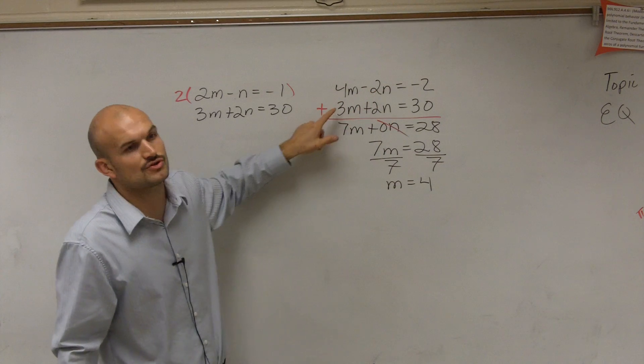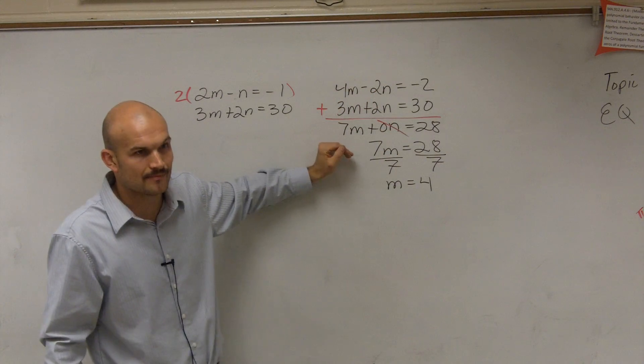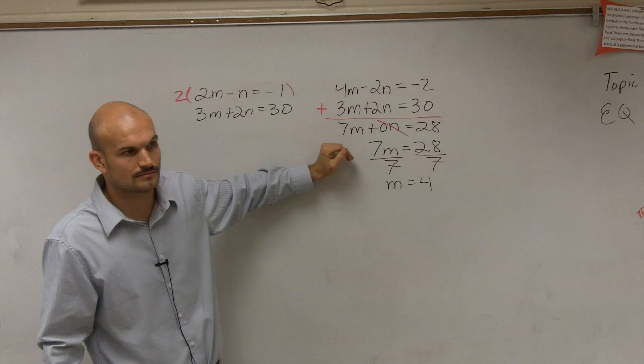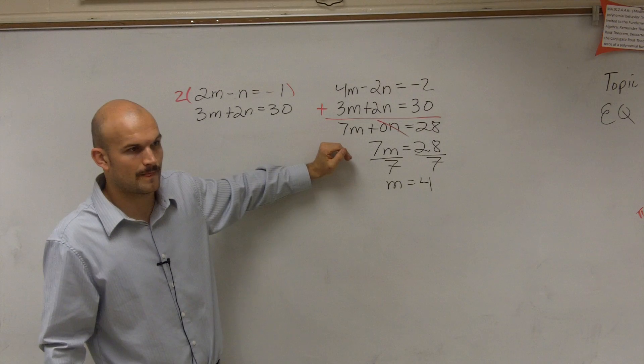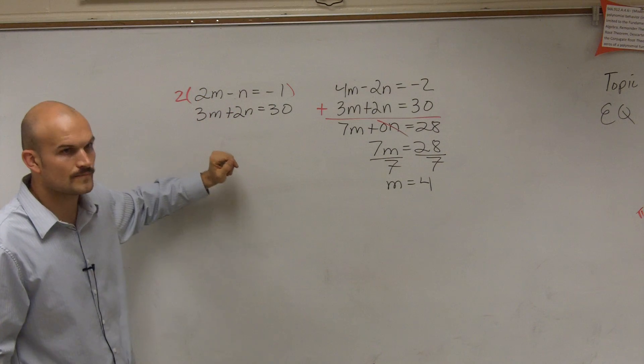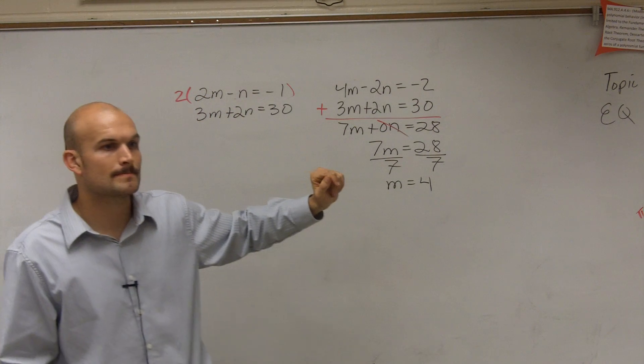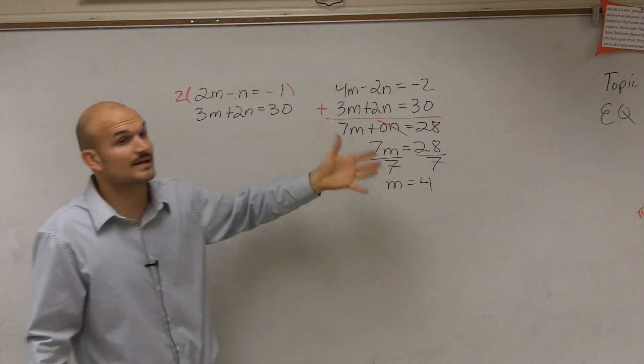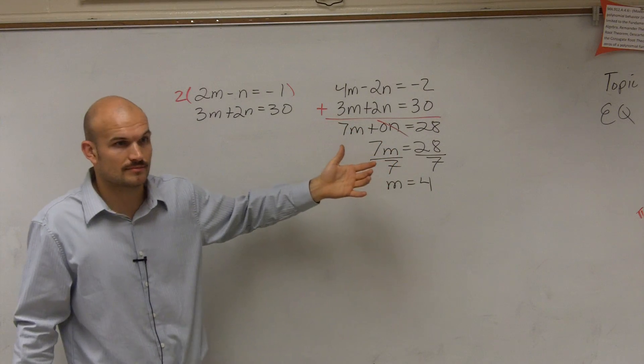If they were both positive 2, what you could do is you could subtract the equations rather than add them. If you already had the coefficients matching, all you would have to do is subtract? Yeah. You're basically trying to get rid of a variable, basically.